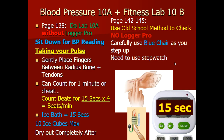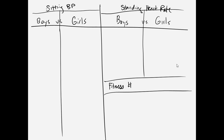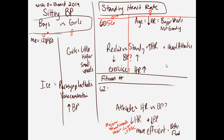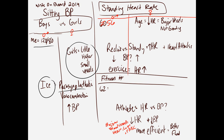As we summarize the lab data, we'd set up a chart inside your ETD comparing sitting blood pressure, standing heart rate, and fitness numbers — boys versus girls, and your data versus mine. My blood pressure is about 120 over 80. Girls tend to have higher blood pressure than boys in class because most girls your age are smaller, with smaller blood vessels and smaller tubes, so fluid runs at higher pressure.